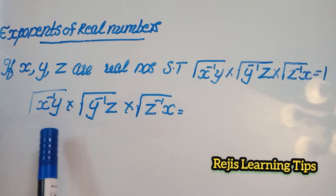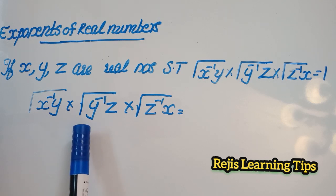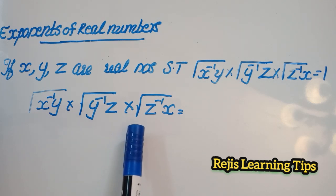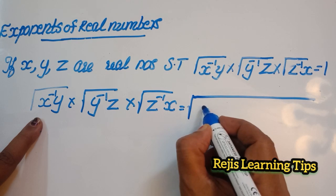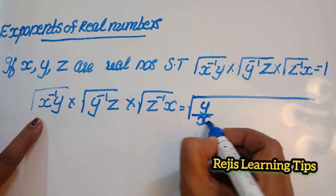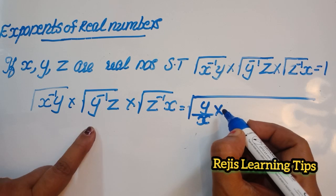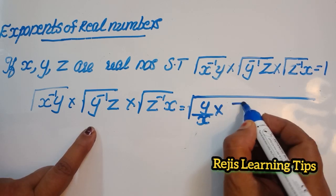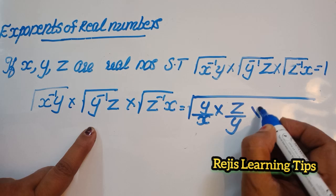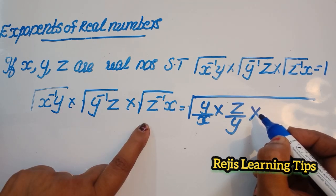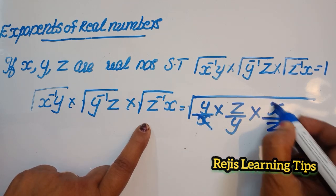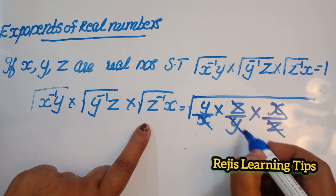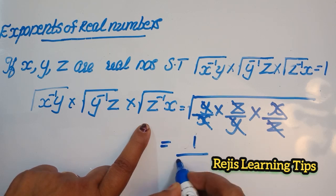Root of x raise to minus 1 y into root of y raise to minus 1 z into root of z raise to minus 1 x is equal to root of x raise to minus 1 y, that means y by x, into y raise to minus 1 z, means z by y, into z raise to minus 1 x, means x by z. So we can cancel x and x, z and z, y and y, then we will get root of 1, that is equal to 1.